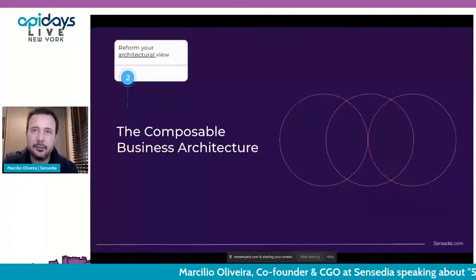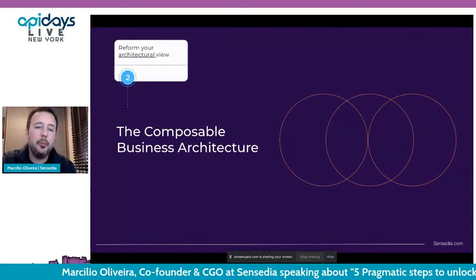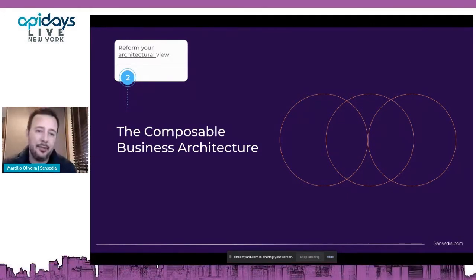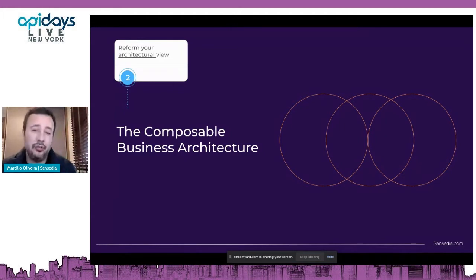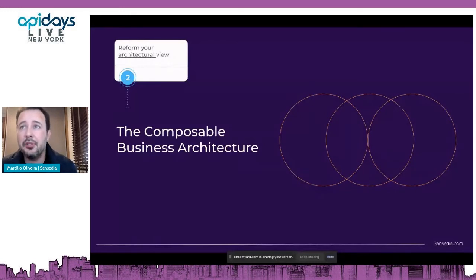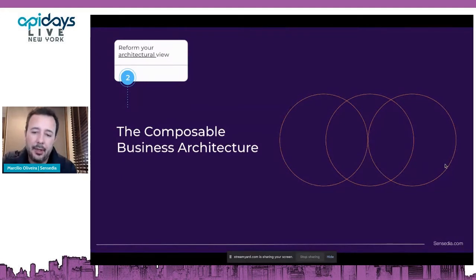The second step is about composable business architecture — how the architecture should solve the problem. The first step was about unlocking the backend, but now how do you resolve it? One hard concept here is composable business architecture. Gartner has talked a lot about this, and we really believe that this vision can transform architecture into a supplier of business building blocks. It's not about services — it's about building business blocks.